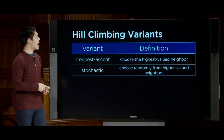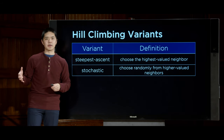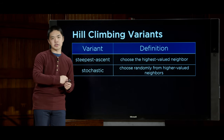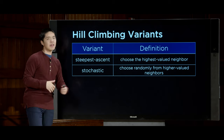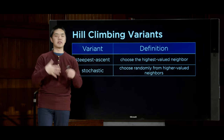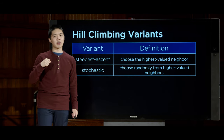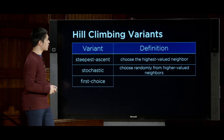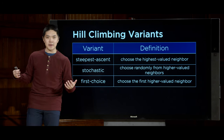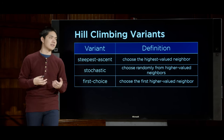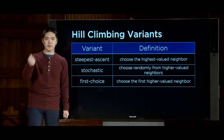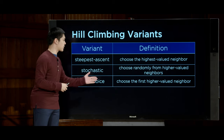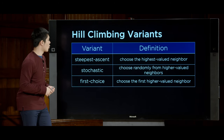Stochastic hill climbing chooses randomly from all higher-valued neighbors rather than always picking the best one. First-choice hill climbing chooses the very first neighbor found that is better than the current state, rather than considering all neighbors — potentially offering efficiency improvements and the ability to find solutions other strategies missed.